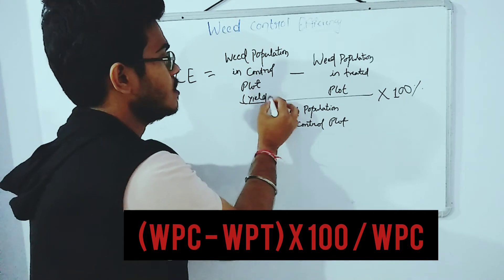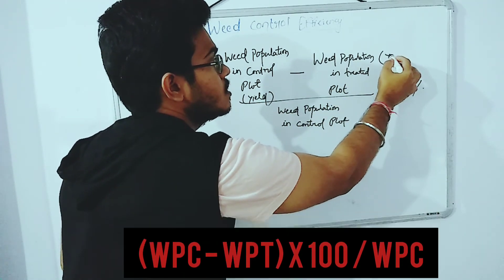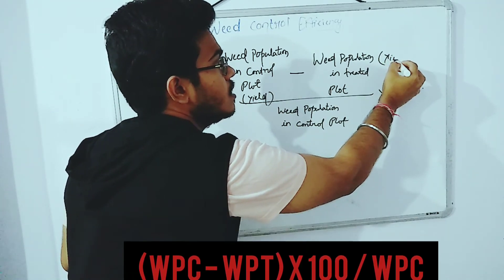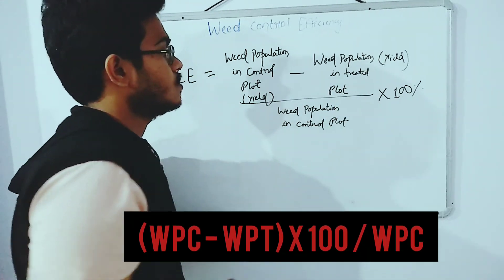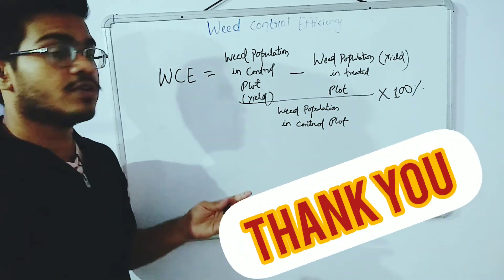Weed population relates to the yield. By this formula we can calculate the weed control efficiency of a system.